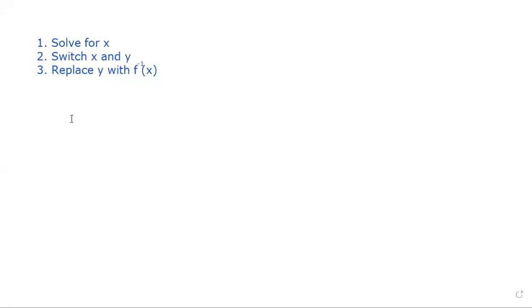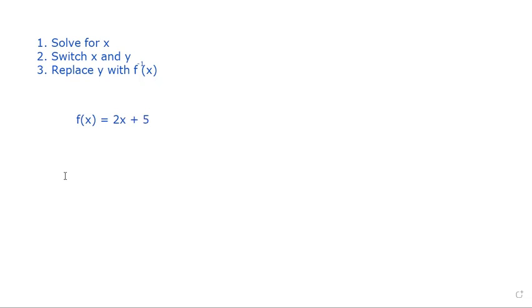So the first thing I want us to do, let's find the inverse of f(x) = 2x + 5. I'm going to rewrite this as y = 2x + 5.